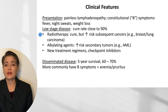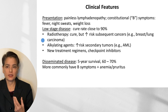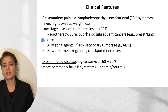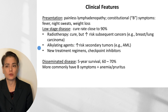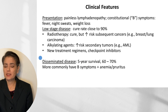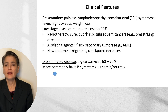In patients with low-stage disease, the cure rate is close to 90%. Radiotherapy was previously used and can be curative, but it increases the risk of subsequent cancers such as breast and lung carcinomas. Alkylating agents are also effective but increase the risk of secondary tumors such as acute myeloid leukemia. Newer treatment regimens including checkpoint inhibitors are now used with less burden on patients. Patients with disseminated disease — stage 3 or 4 — can still have a survival rate of 60 to 70%, though they more commonly present with B symptoms, as well as anemia and pruritus.